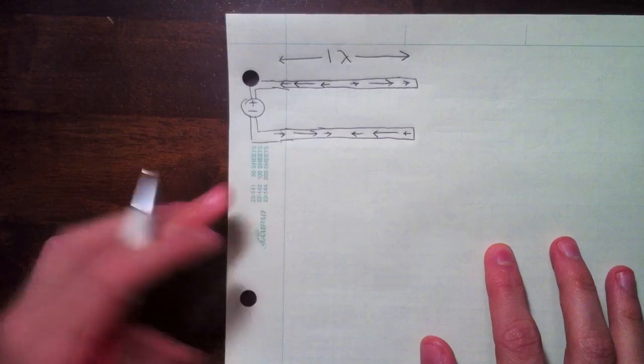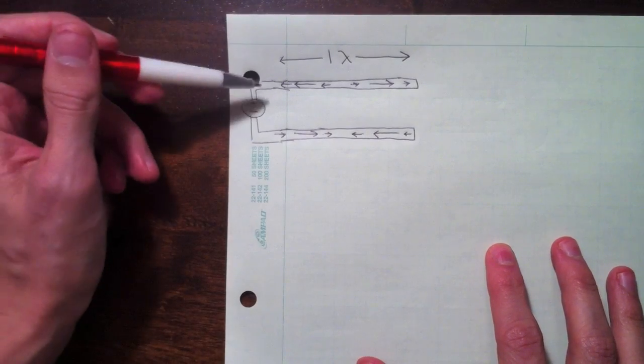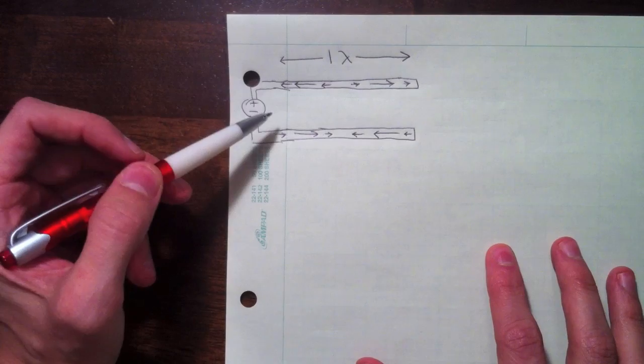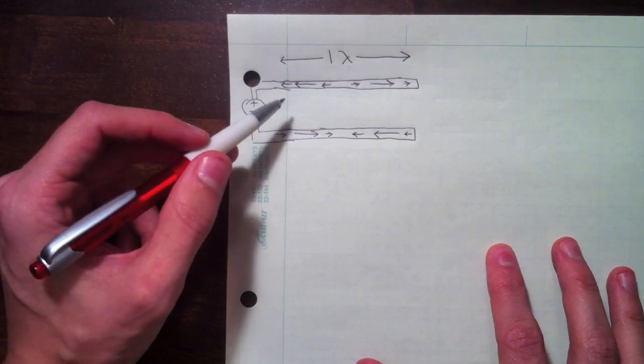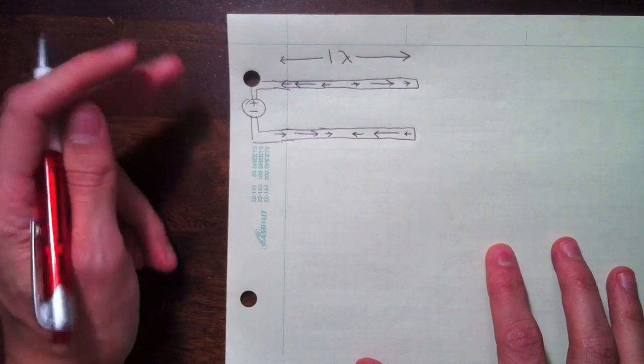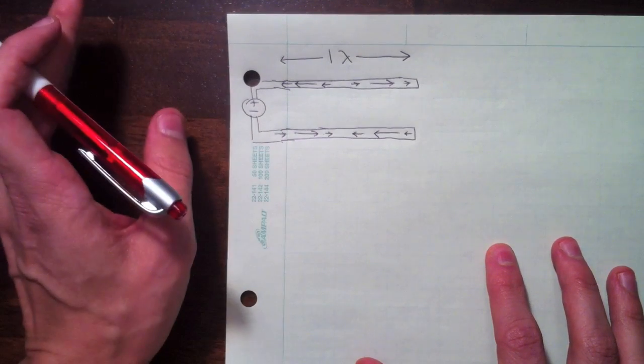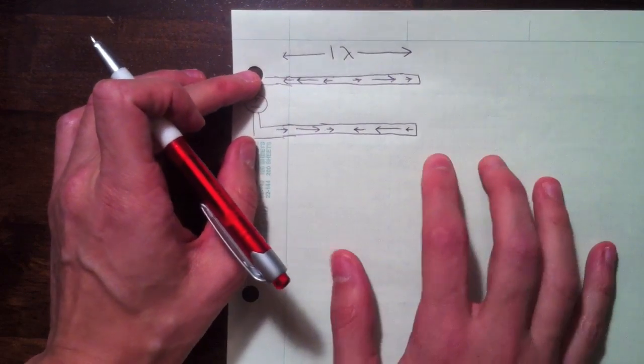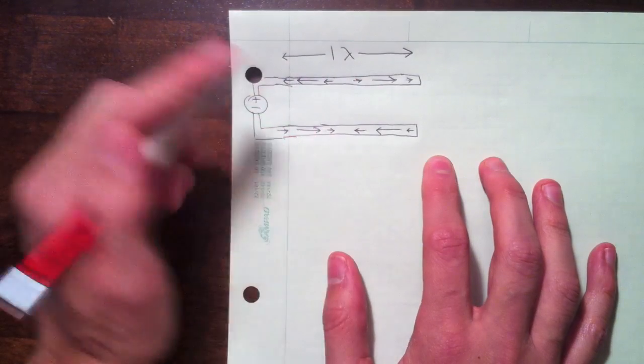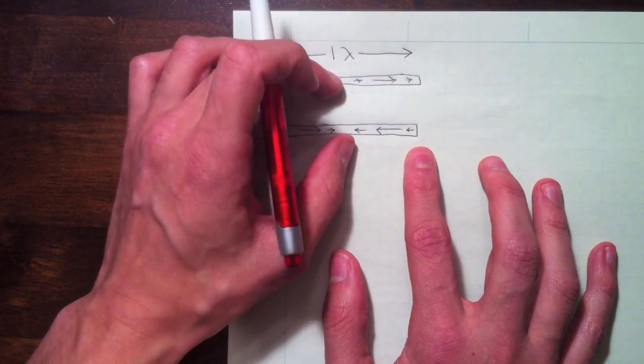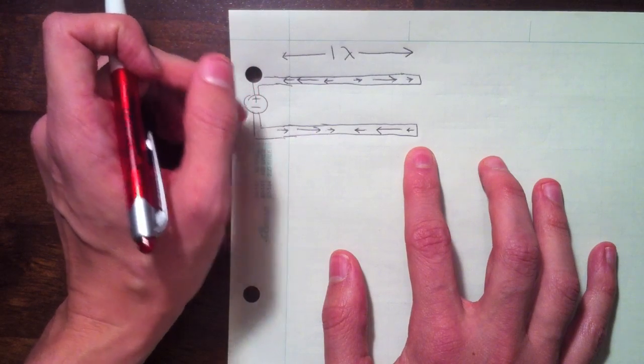So first, to understand the antenna, I want to talk about transmission line. Imagine this is some transmission line, and it's a large fraction of a wavelength, which means we can't use low-frequency circuit theory, which means we have to understand how wavelength plays a role. So imagine that we have this transmission line here, called just a two-wire line.